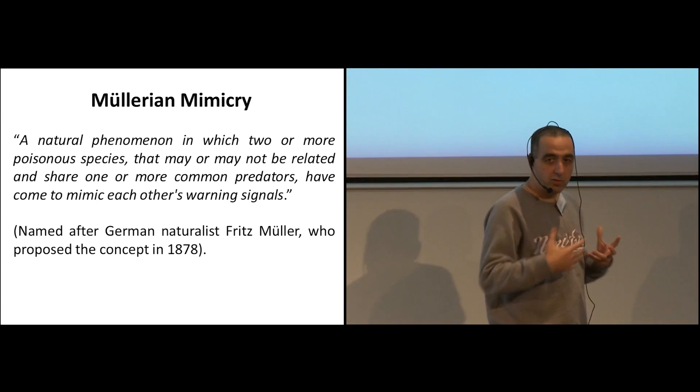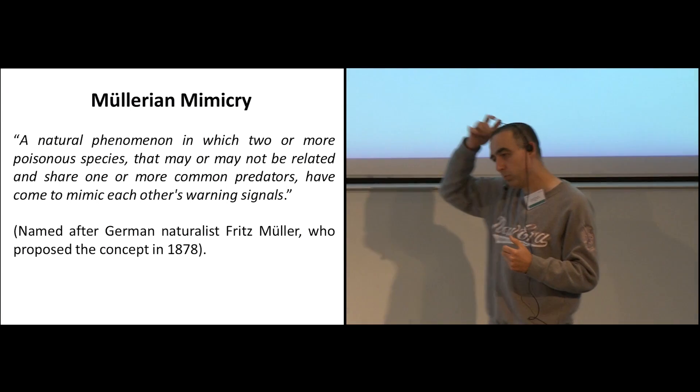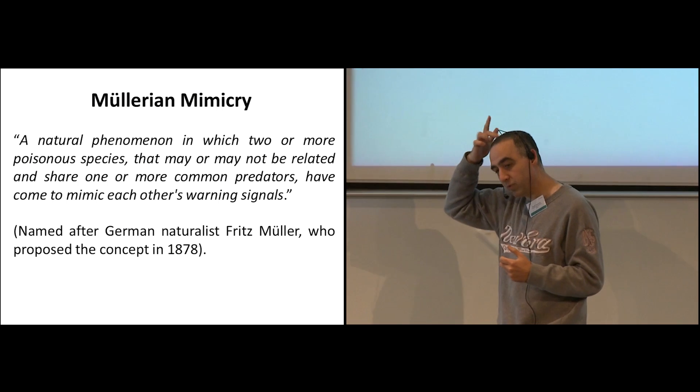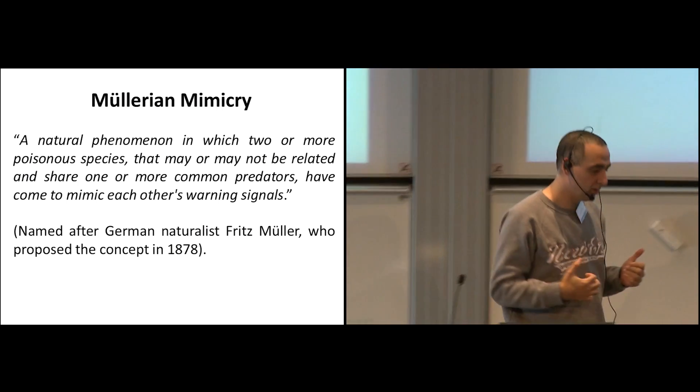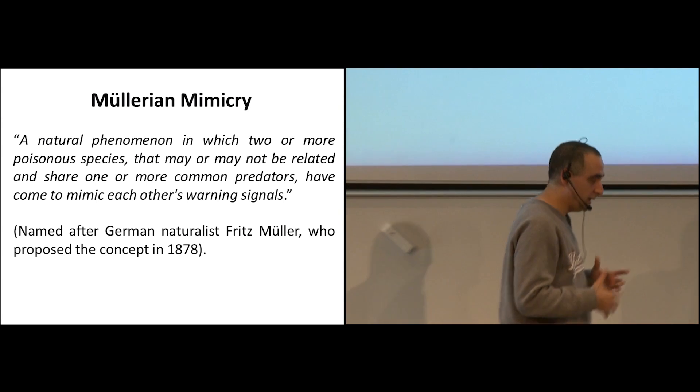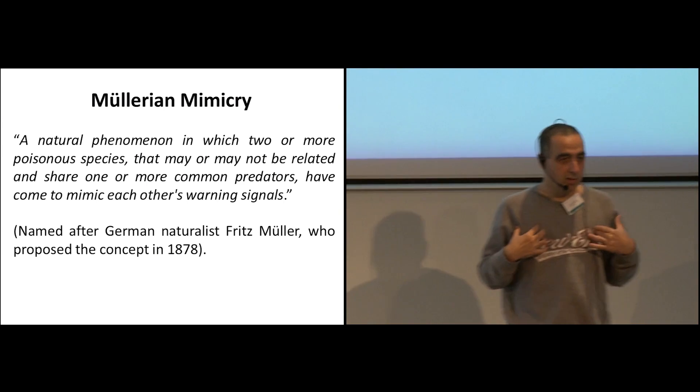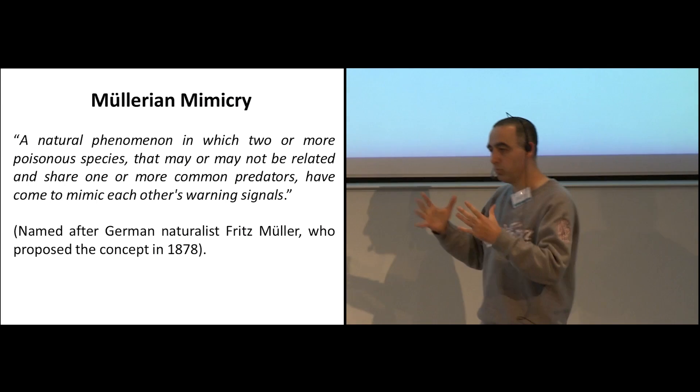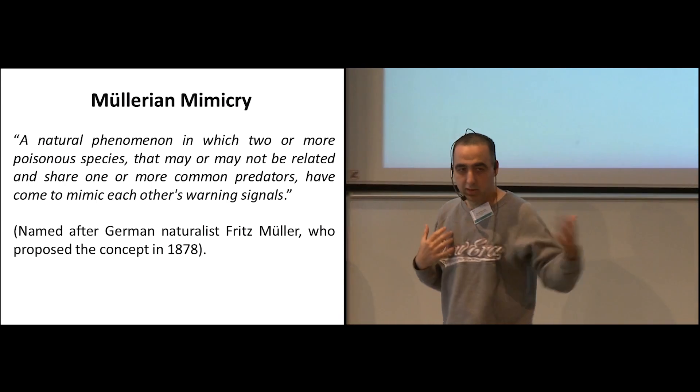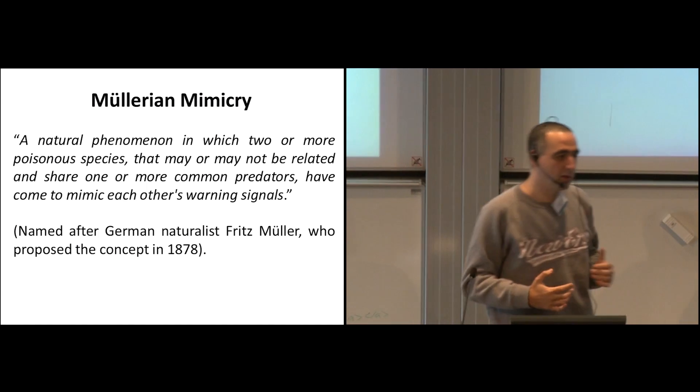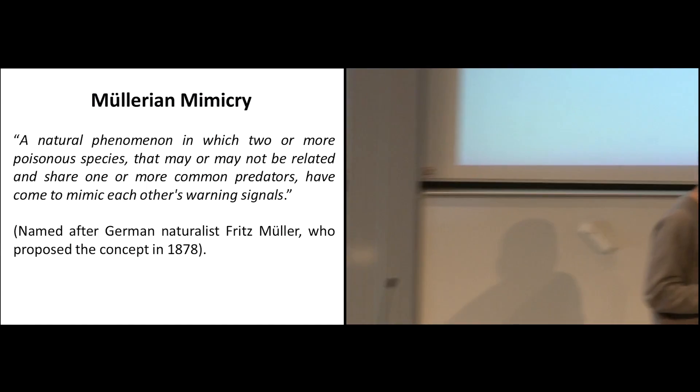Basically, if I have nothing to do with him and we are both poisonous in different ways, let's say that he contains poison A and I contain poison B, and we look alike, if a predator attacks me then the predator is going to get a lesson. If he attacks him, he's going to get a lesson. Our interest is to maximize the population of predators who get a lesson.